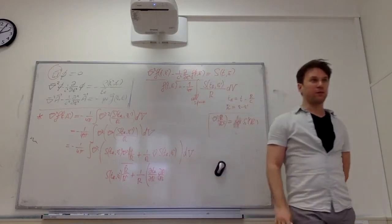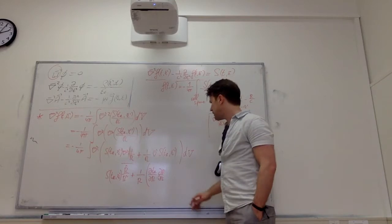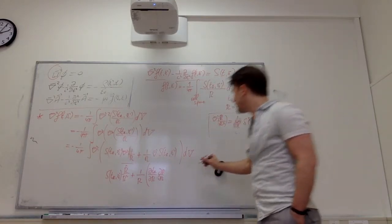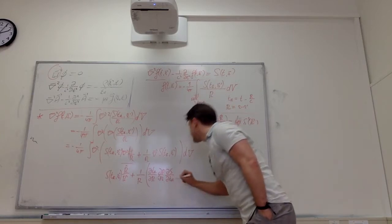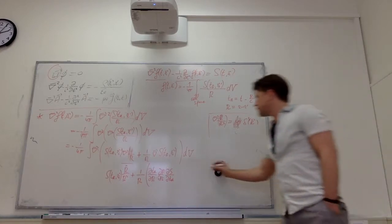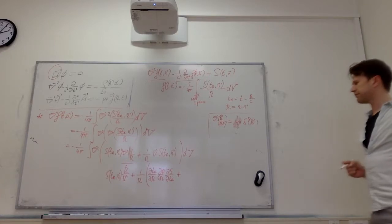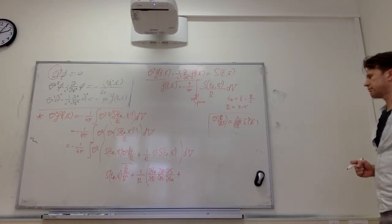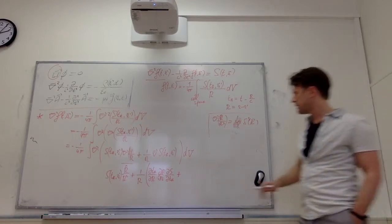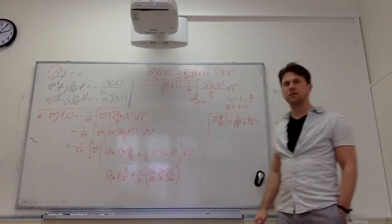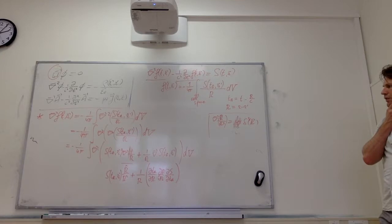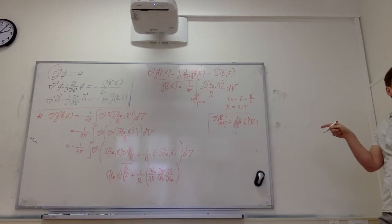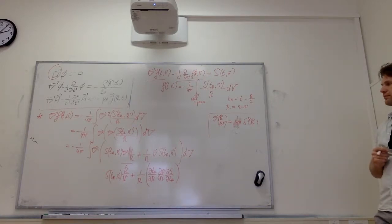We still have to take the divergence of all of this. One trick is to try to produce a delta function. The divergence of r̂ over r² gives the delta function. But we are taking the divergence of r̂ over r times a scalar, and we have to apply the proper product rule for the divergence operating on a vector times a scalar.